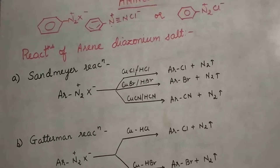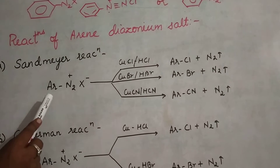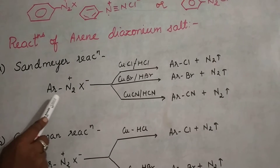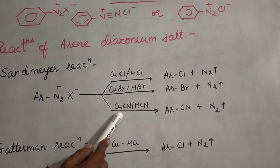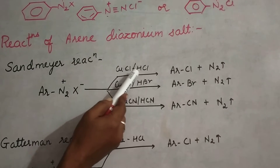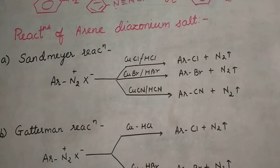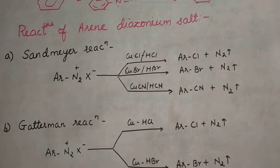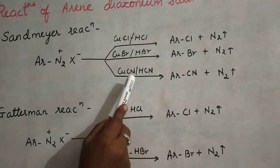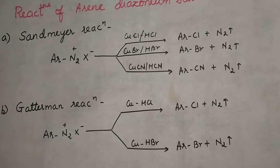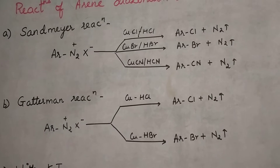First is the Sandmeyer reaction, which we have also observed in halogen derivatives. The arene diazonium salt, written generally as Ar-N2+X−, can be treated with CuCl (copper chloride), CuBr (copper bromide), or CuCN (copper cyanide). Along with CuCl and HCl, it forms ArCl and nitrogen gas. Similarly, CuBr and HBr give ArBr, and copper cyanide gives ArCN, with nitrogen liberated in each case. So the halide gets attached to the aromatic ring while nitrogen goes out. This reaction was also seen in halogen derivatives when studying preparation of aromatic halide compounds.